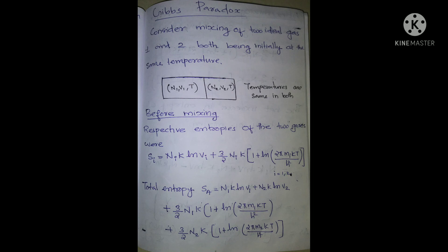So we are going to use the Gibbs Paradox. We have two ideal gases, gas 1 and gas 2, which we are going to mix. We have two systems: N₁, V₁, T and N₂, V₂, T. The temperature T is constant and the same for both. The entropy for each system i is: Sᵢ = nᵢk log Vᵢ plus (3/2)nᵢk times [1 plus log(2πmᵢkT / h²)].